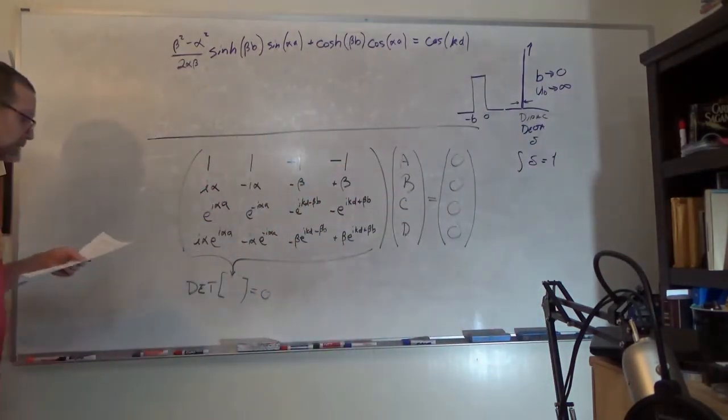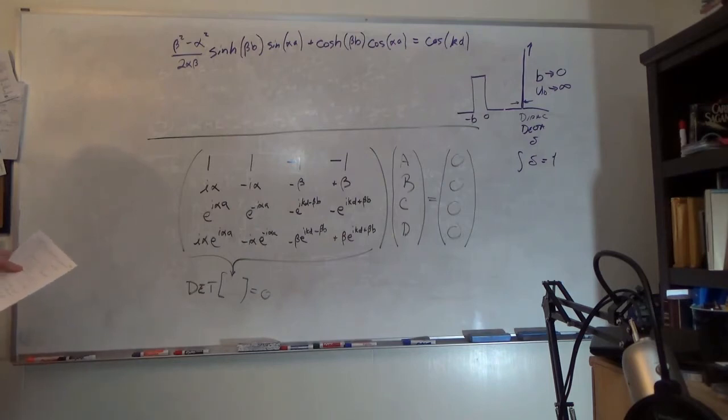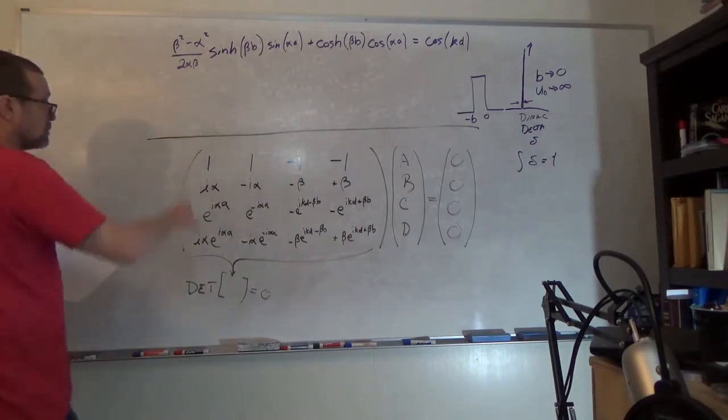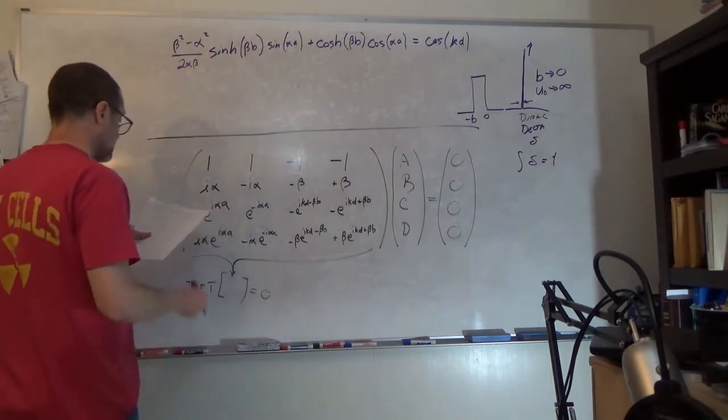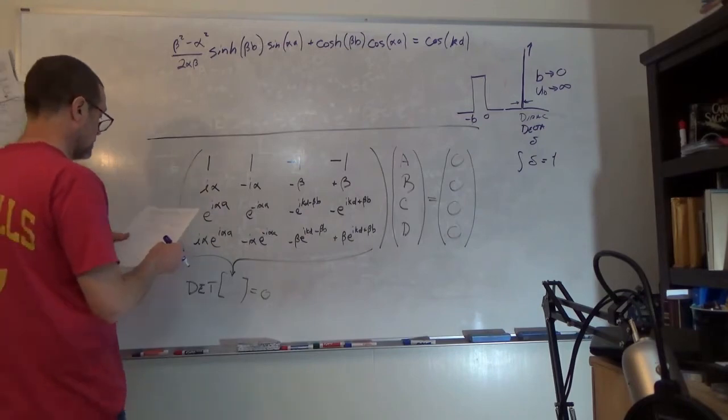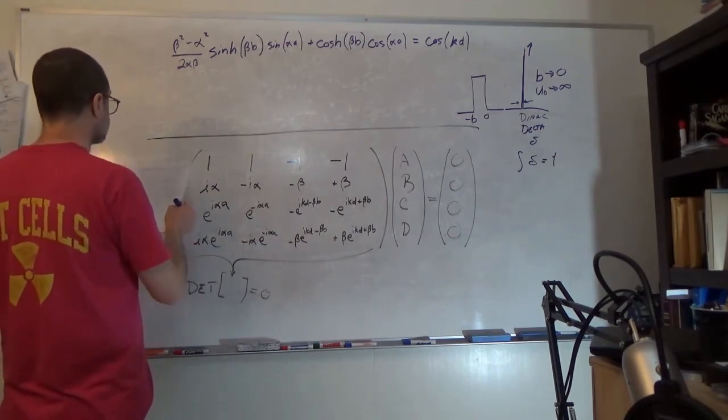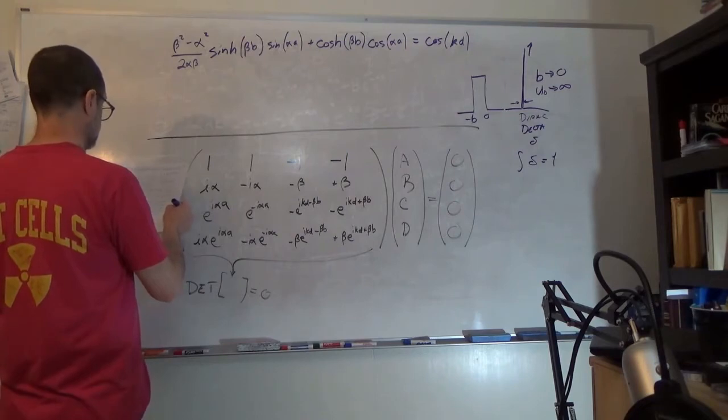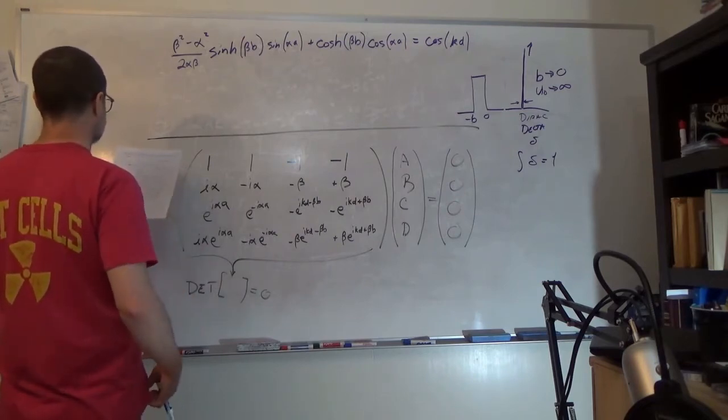Well, there's no u naught in our solution, but we do have these that have to go to zero. You can use numerical software to take limits, or go through and perform this term by term. But at the end of the day, what we wind up with is this simplified form.